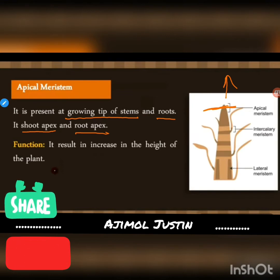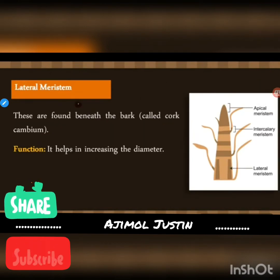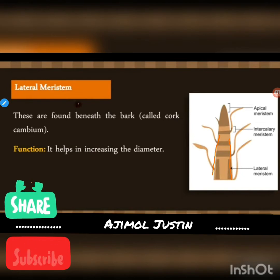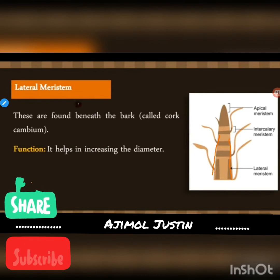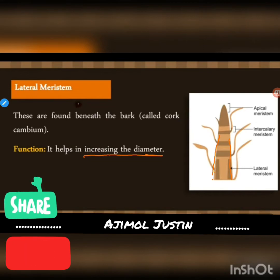You can see in gardens that if the apical meristem is cut, the plant will not grow in length. Next is lateral meristem, found beneath the bark — the outer covering of the plant. If you remove this covering, you can find the lateral meristem. Its function is to increase the diameter of the plant.